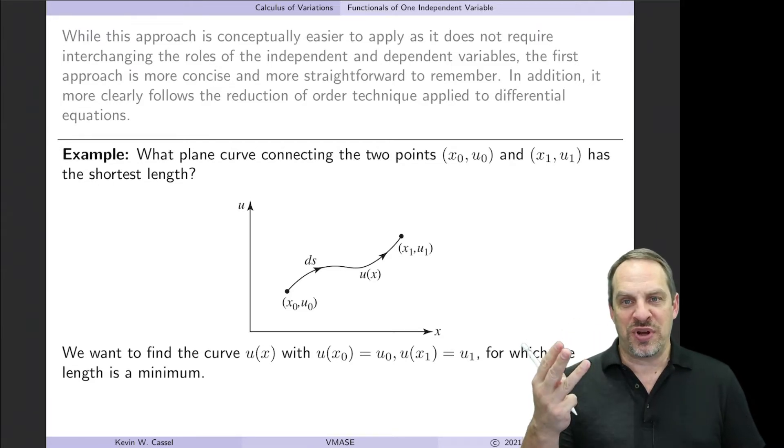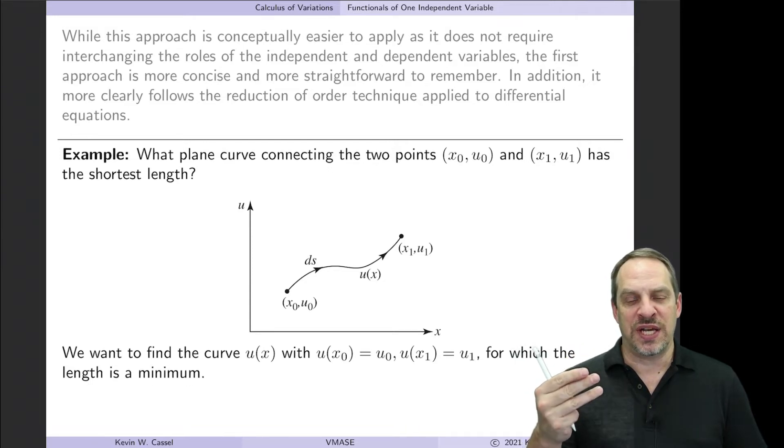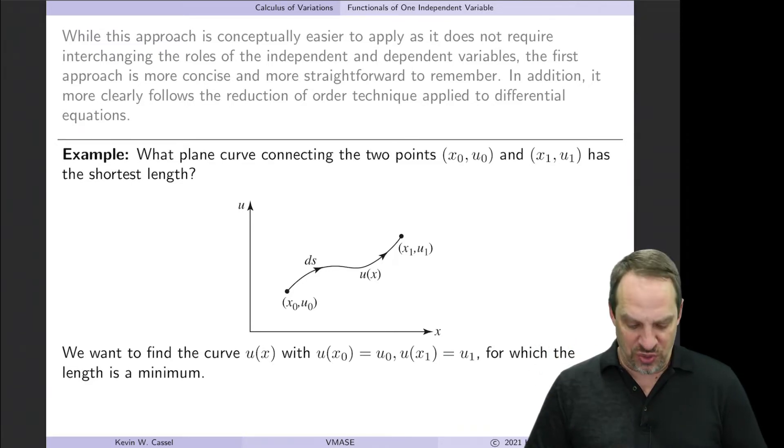Remember the three-step process that we discussed at the end of the last video. We're going to get the functional to get the variational form. The second step is to get the Euler equation for that functional. And then the third step is to solve that Euler equation.